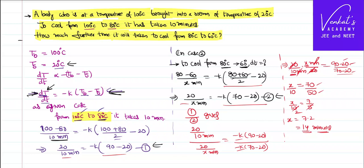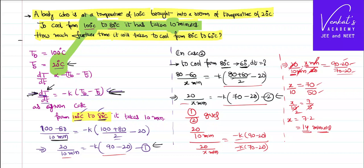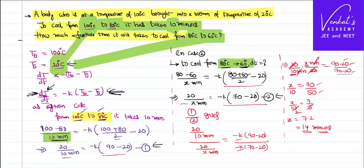I want you to understand the answer carefully and see what Newton's law of cooling really means. To cool from 100 to 80 degrees it took 10 minutes, when surroundings is at 20. The difference between body and surroundings was 80 degrees — a large difference — so cooling was fast. The temperature loss in both cases is the same 20 degrees, but the temperature difference between body and surroundings, delta T1, is greater than delta T2.